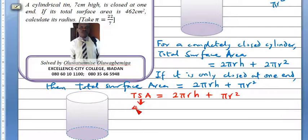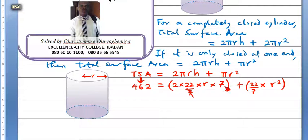This one is given to be 462. Pi is given to be 22 by 7. So the height is given to be 7, and the radius is not known, so I put r. Then for this other side now, we have 22 by 7, radius square. This 7 cancels this 7, so that 462 is equal to 44 r plus 22 r square over 7.